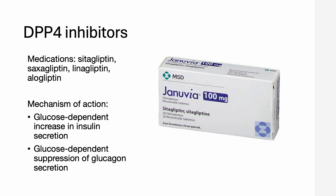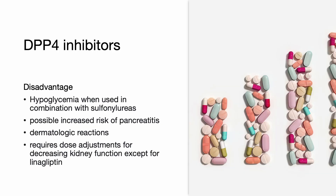DPP-4 inhibitors include sitagliptin, saxagliptin, linagliptin, and alogliptin. Their mechanism of action includes glucose-dependent increase in insulin secretion and glucose-dependent suppression of glucagon secretion. Disadvantages include hypoglycemia when combined with sulfonylureas, increased risk of infections, increased risk of pancreatitis, dermatologic reactions, and the requirement for dose adjustments for decreasing kidney function — except for linagliptin, which does not require renal dose adjustment.